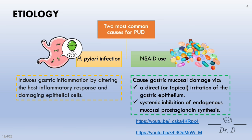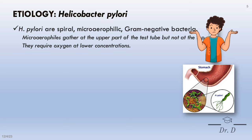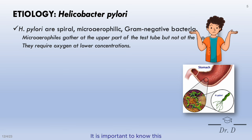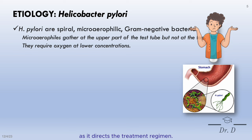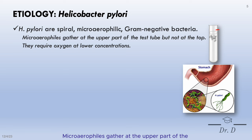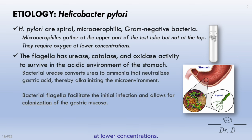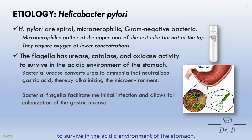The other cause of peptic ulcers can be stress-related. H. pylori are spiral microaerophilic gram-negative bacteria — important to know as it directs the treatment regimen. Microaerophils gather at the upper part of the test tube but not at the very top, requiring oxygen at lower concentrations. The flagella has urease, catalase, and oxidase activity to survive in the acidic environment of the stomach.